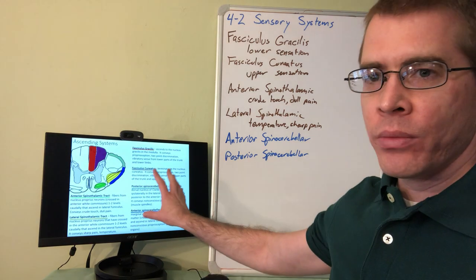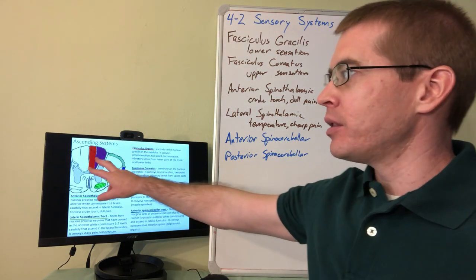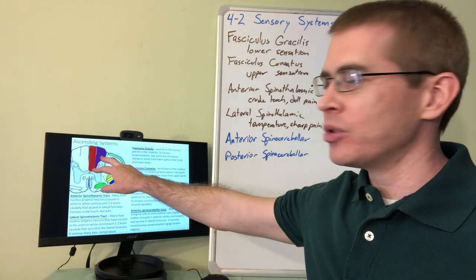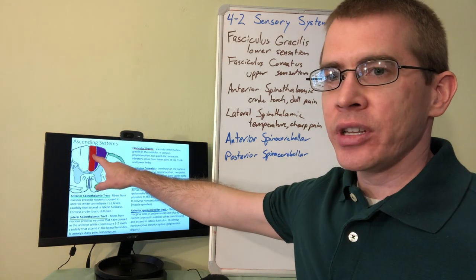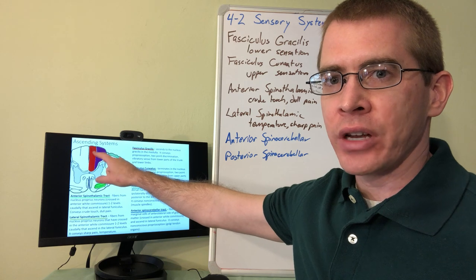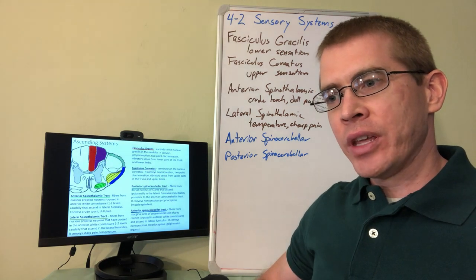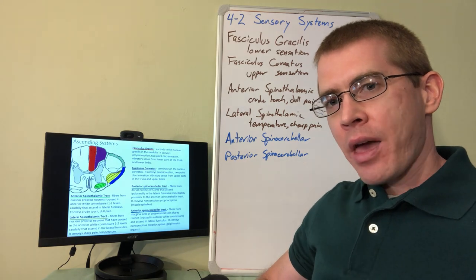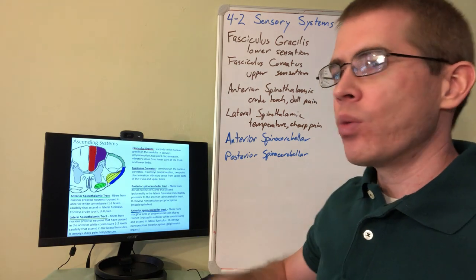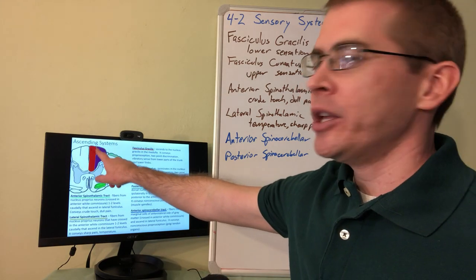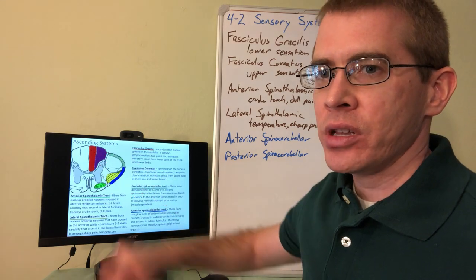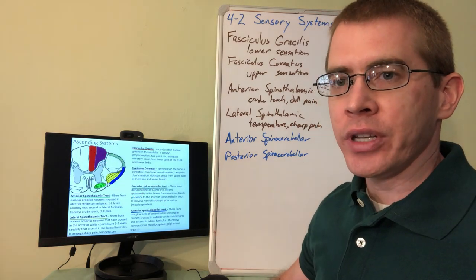So we've seen this slide before, but again this time we're adding the fact that these tracts are somatotopically organized. We see that fasciculus gracilis is responsible for the sacral and lumbar portions of the spinal cord, so it's conveying information from the abdomen and from the lower limbs, whereas the wedge-shaped fasciculus cuneatus, which is what cuneatus means, wedge-like.